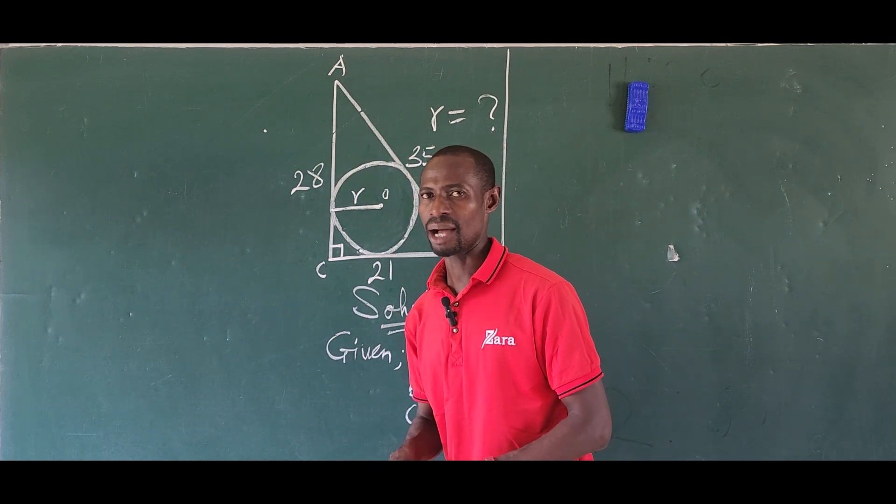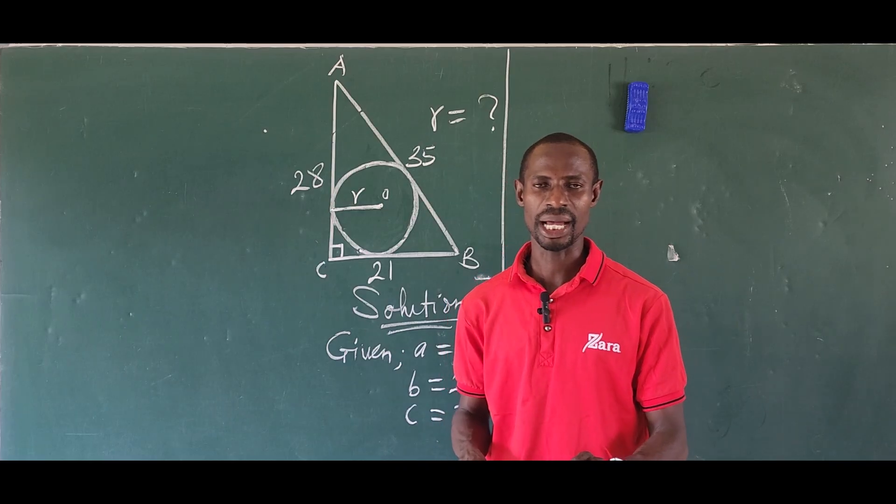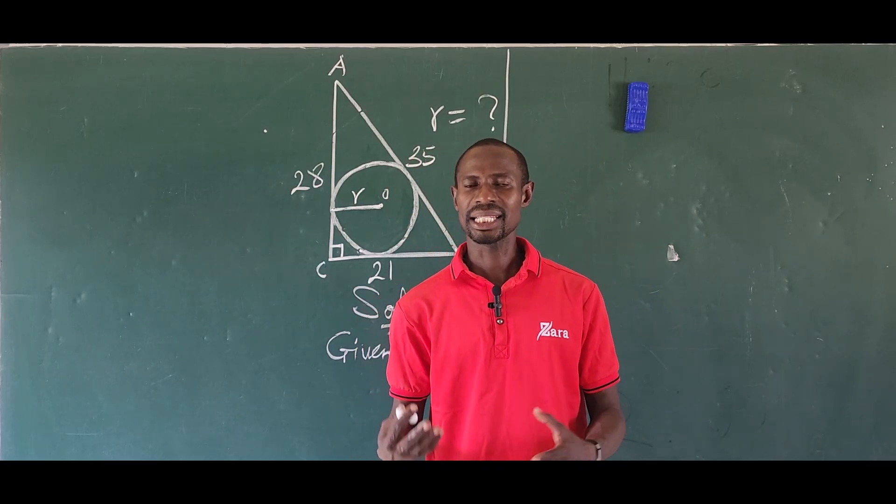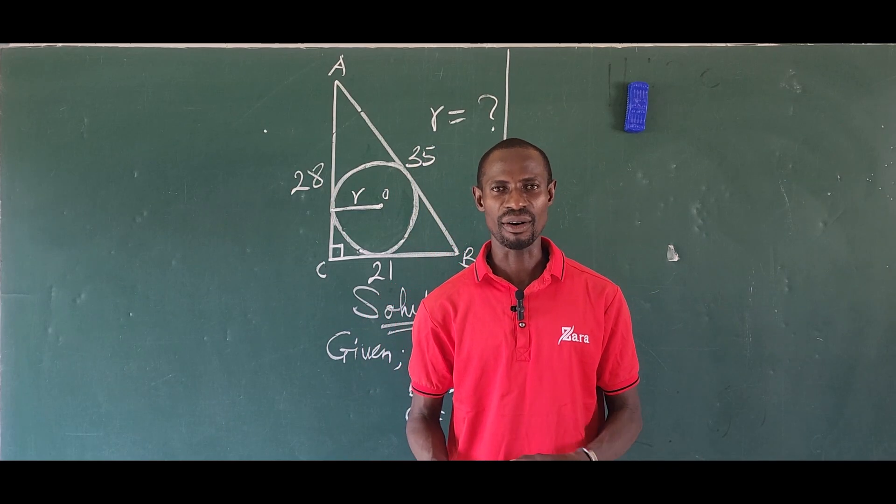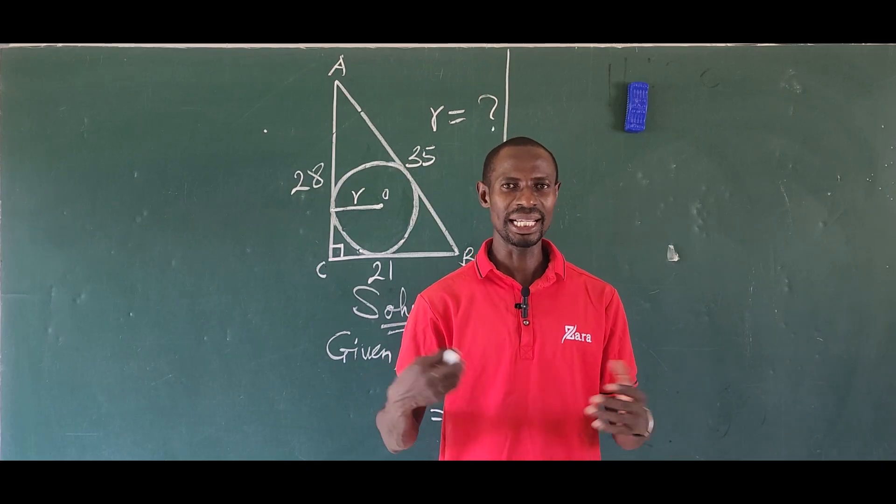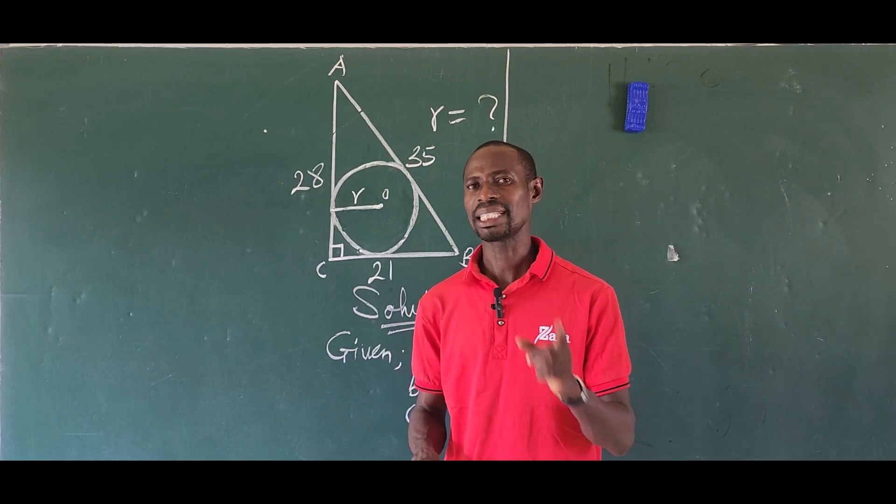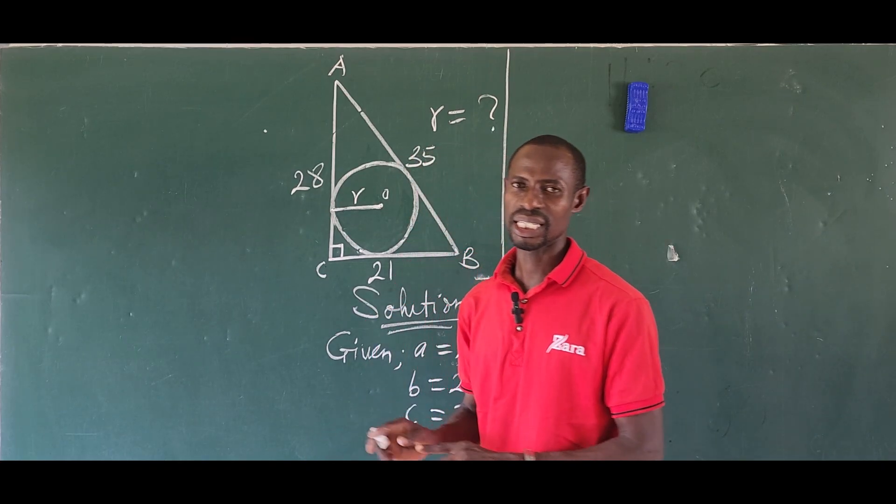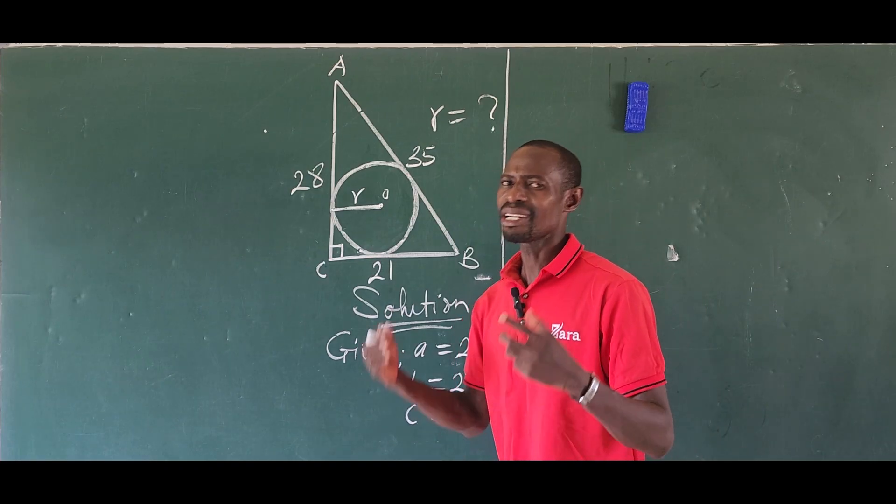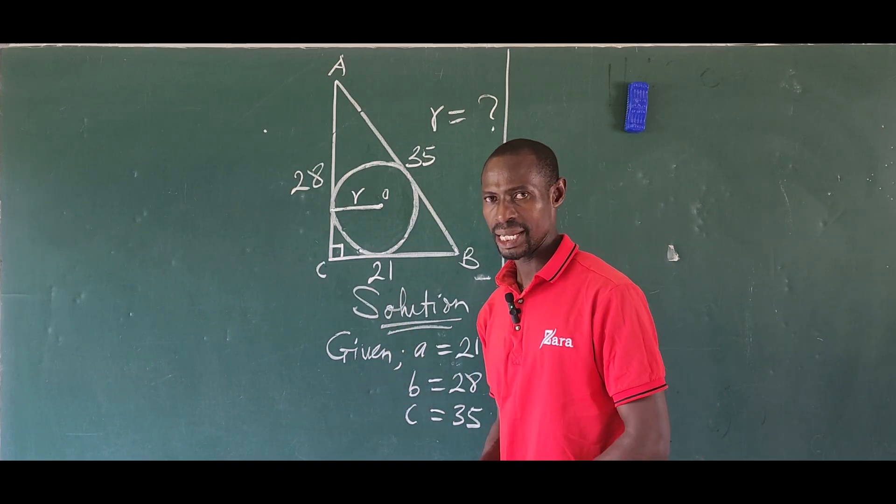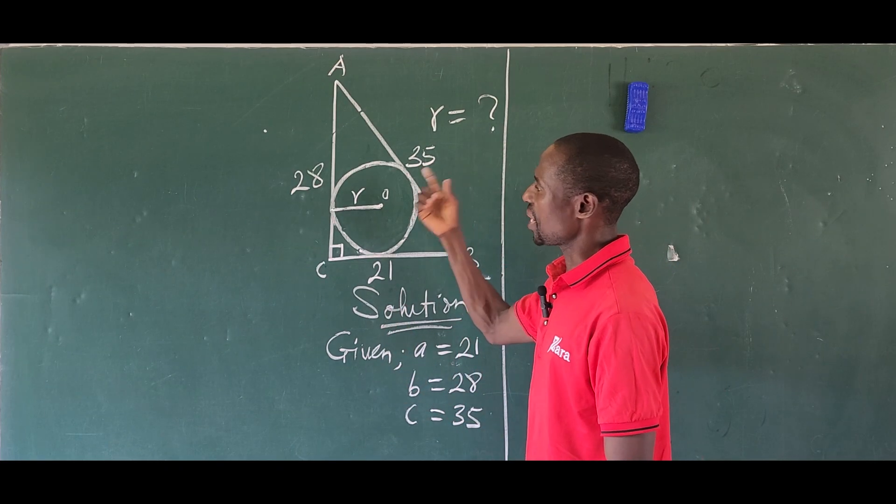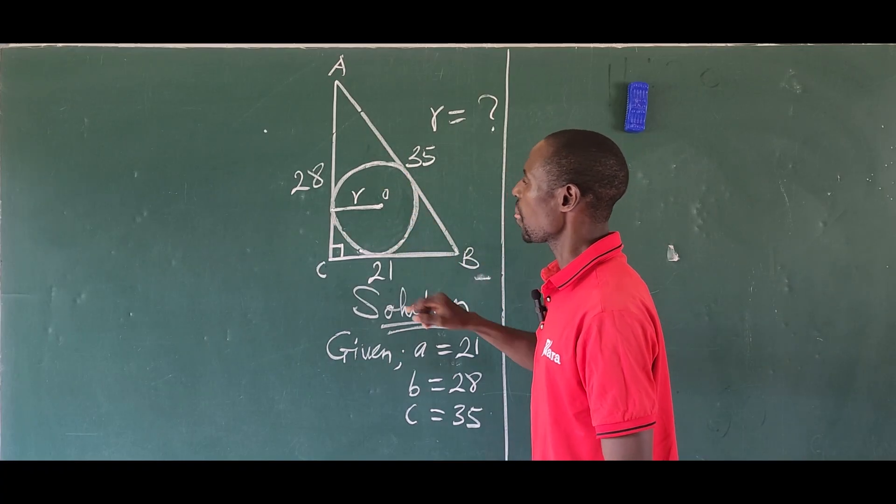When the height is not given, we use the Hero's formula. If you're familiar with it, there's what we call s, and s stands for the semi-perimeter of the triangle. We find s equals (a + b + c) / 2. There is a strong relationship between the semi-perimeter of this triangle and the radius of the circle inscribed inside.